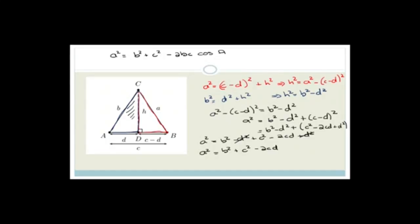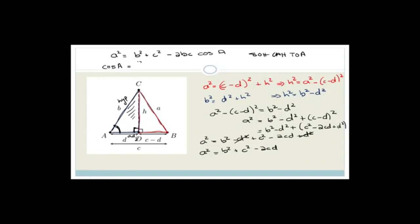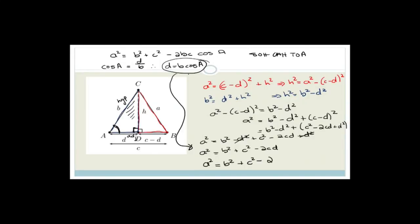Looking at our left right-angle triangle, using SOHCAHTOA, cos A equals the adjacent side d over the hypotenuse b. Therefore d = b cos A. Substituting that into our equation: a² = b² + c² − 2bc cos A. And there we have proven the cosine rule.